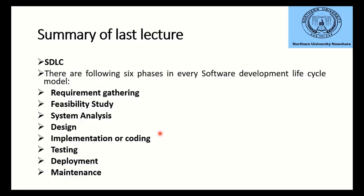We covered the six phases of software development: requirement gathering — how to collect requirements for a particular software; feasibility study — to ensure the software is feasible and possible within the given resources; and system analysis — identifying functional and non-functional requirements. Core functional requirements are the basic requirements without which the software is not acceptable to the customer.